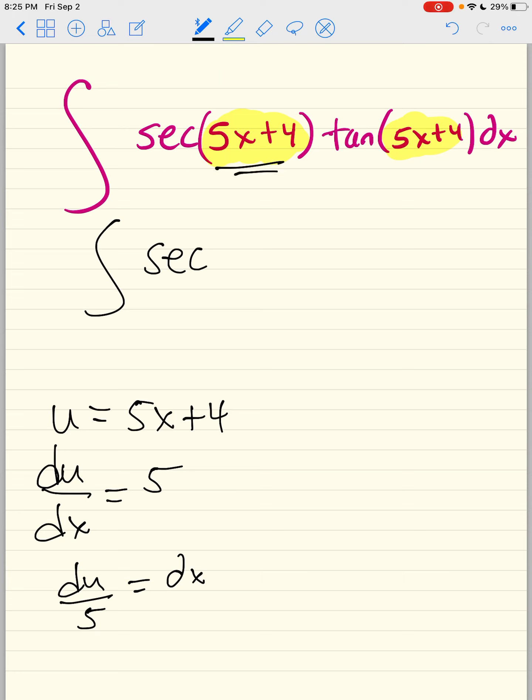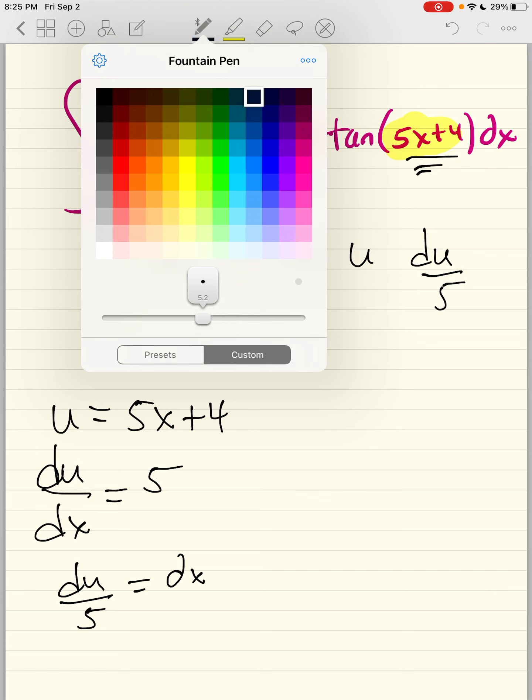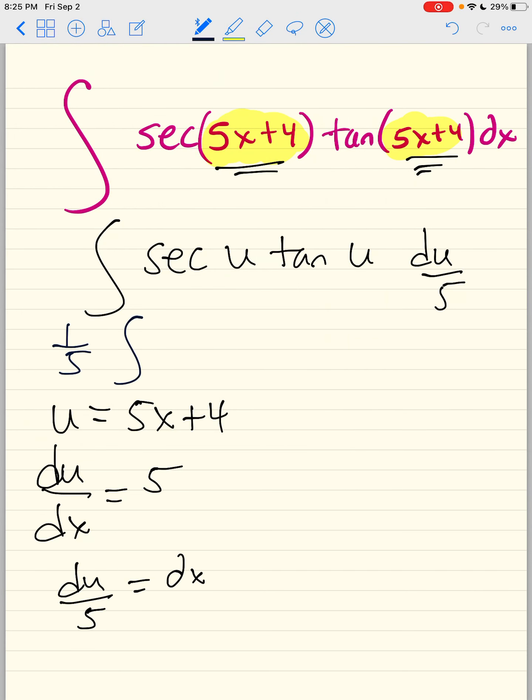We're going to go back in order. We call this person u. We call this person u. And this person is du over 5. Well, 5 is just a number. So I'm going to call this 1/5 secant u tan u. Did you know that secant u tan u is a perfect integral?